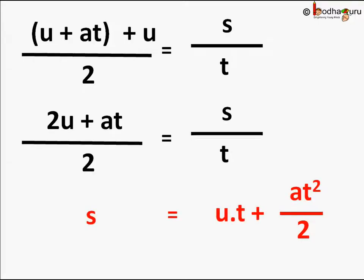t goes to other side. So this reduces to s equal to ut plus half a t square. We use this formula to find displacement s given initial velocity u, acceleration a and time taken t.